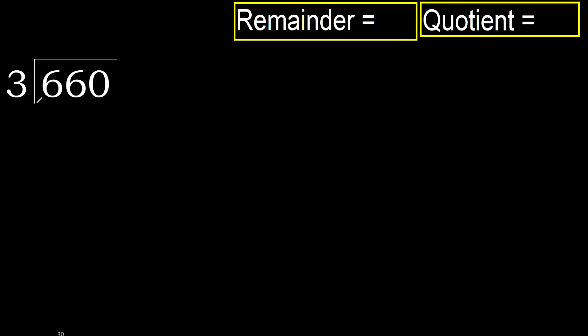660 divided by 3. 6 is not less, therefore with 6, 3 — multiply by which number is nearest: 2, 6, but not greater. 3 multiplied by 3 is 9; 9 is greater, so multiply by 2. 6 is not greater.